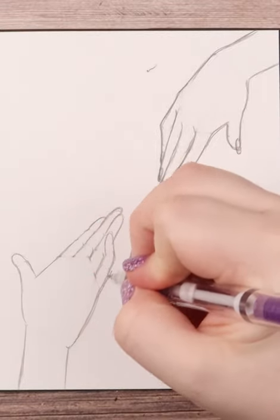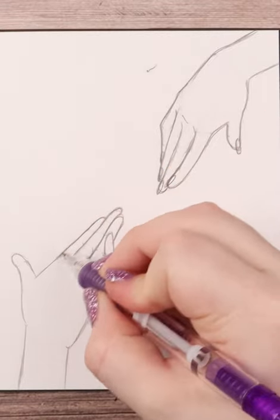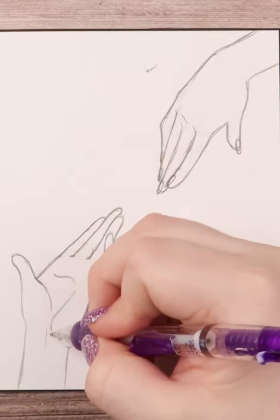Once all the structure guidelines are down I start erasing some of the guidelines and start fleshing out the rest of the hands.